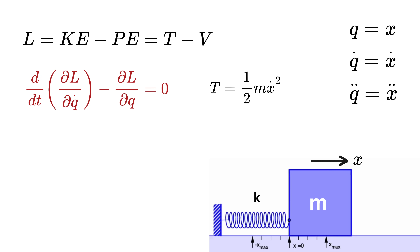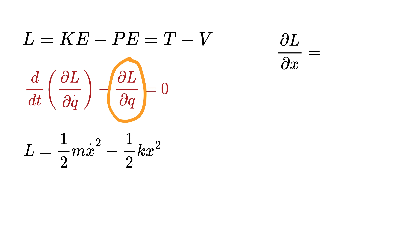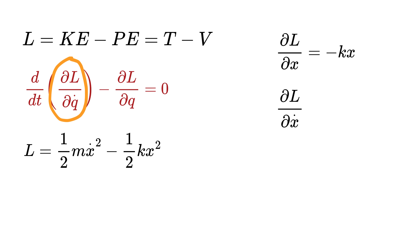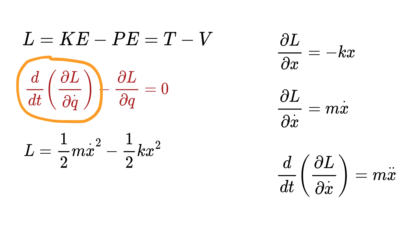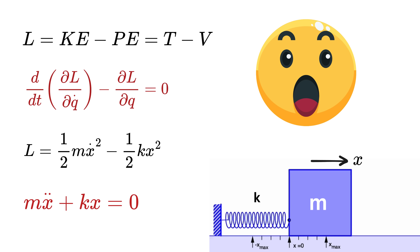The kinetic energy T is one-half m times x-dot squared, and the potential energy V stored in the spring is one-half k times x squared. So the Lagrangian L equals T minus V. The partial derivative of L with respect to x gives minus k times x, and the partial derivative with respect to x-dot gives m times x-dot. Taking the time derivative gives m times x-double-dot. Plugging these in gives m times x-double-dot plus k times x equals zero — the famous spring-mass equation, with no forces involved.